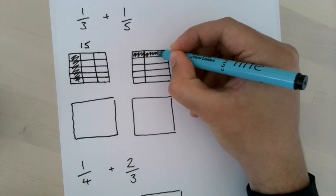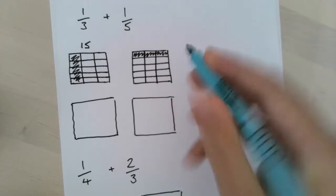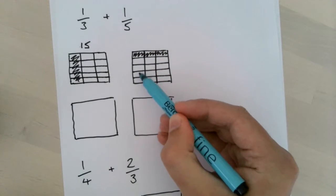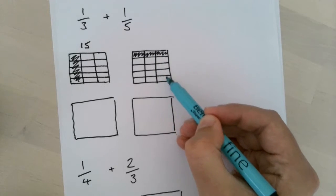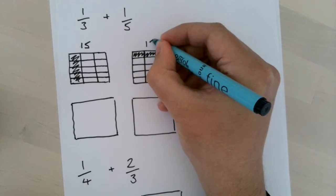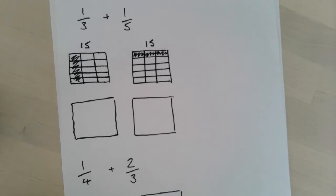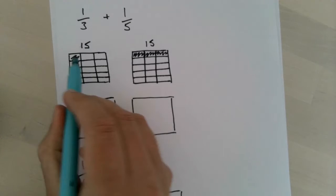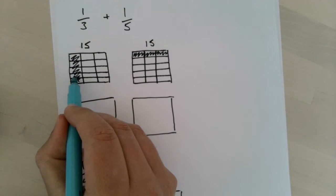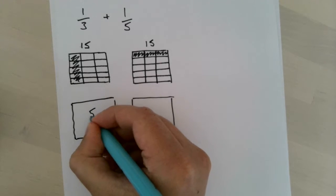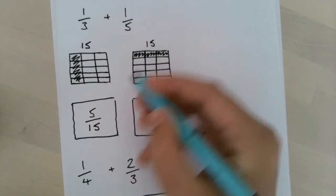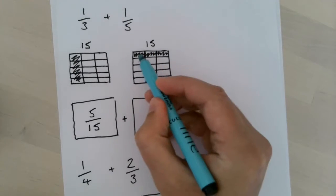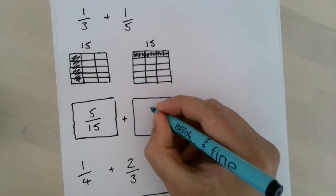Again, count the parts: 1, 2, 3, 4, 5, 6, 7, 8, 9, 10, 11, 12, 13, 14, 15. So we've counted the shaded parts now. I now have 5 fifteenths, add 1, 2, 3 - that's 3 fifteenths.